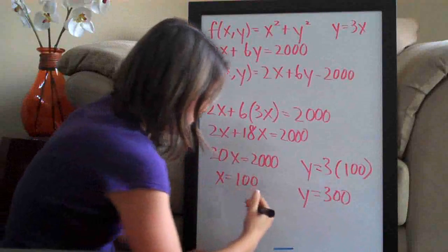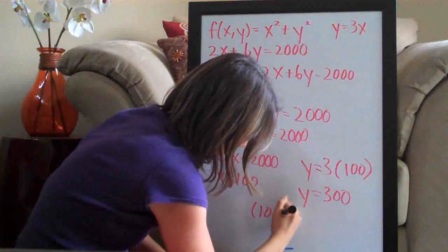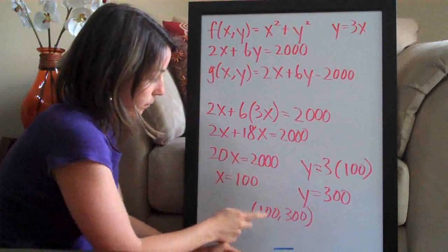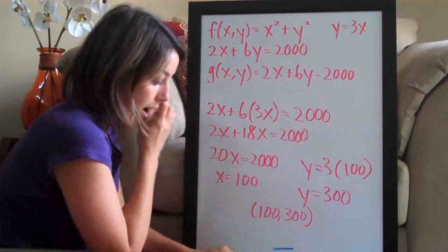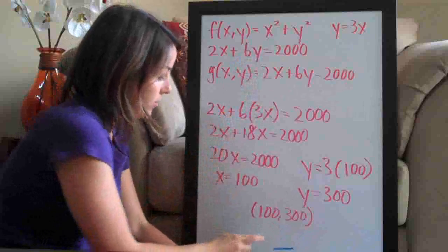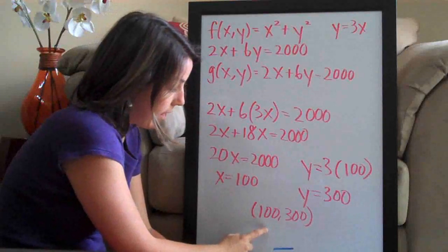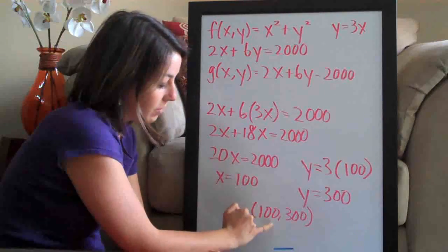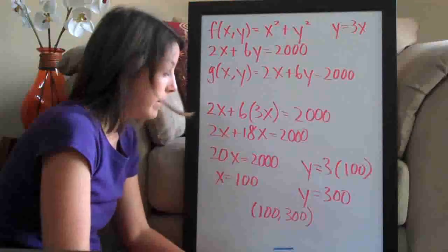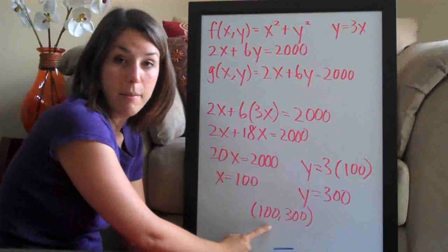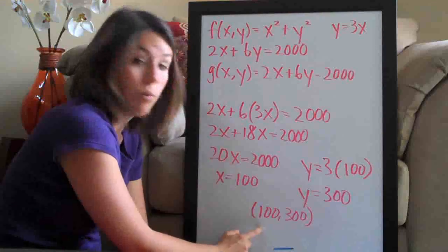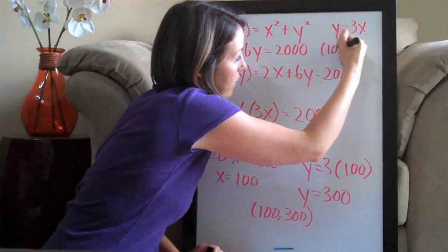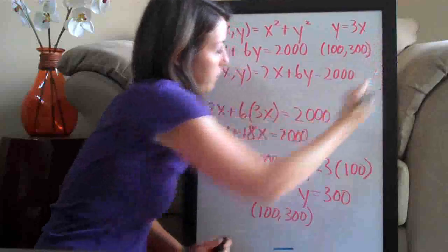So our critical point is (100, 300) — that is, x = 100 and y = 300. All of these steps were done to find this point, because we're looking for either a local minimum or a local maximum. This is the point at which the local minimum or maximum exists, but we still need to determine whether it's a max or a min.